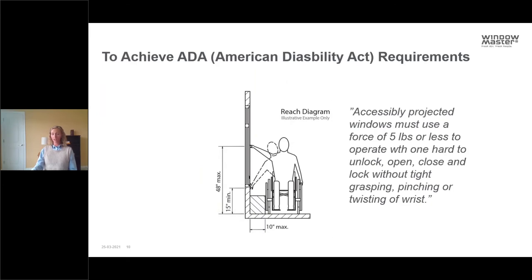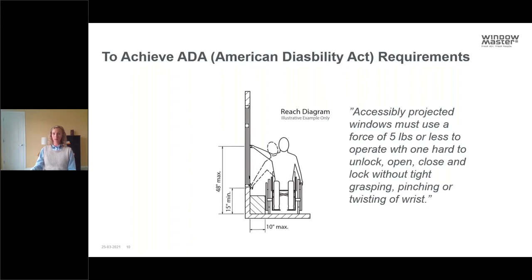Another application that isn't talked about enough is the use of window actuators for ADA — the American Disabilities Act. If you have a window that's really heavy or too high up and you need operability for everybody in certain rooms or zones, using a window actuator on a specific window is a way to also comply with ADA. I have great project examples I can share if anyone is interested.